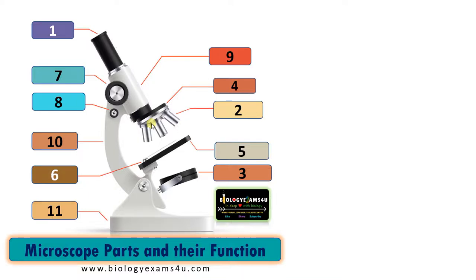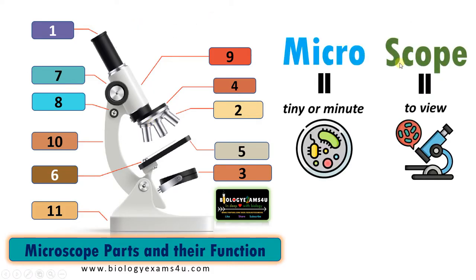Hi friends, hope you are fine. Today let us understand different parts of microscope and their function within three to five minutes. Micro means tiny or minute, like microorganisms. Scope means to view or to observe. So it's an instrument that is used to observe tiny objects like microorganisms that cannot be seen with our naked eyes.